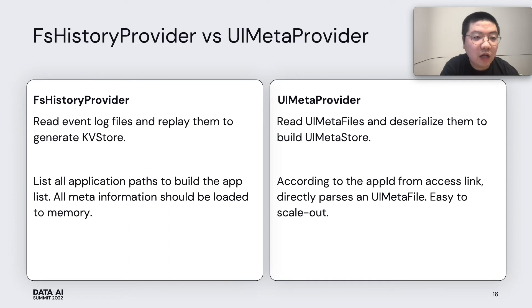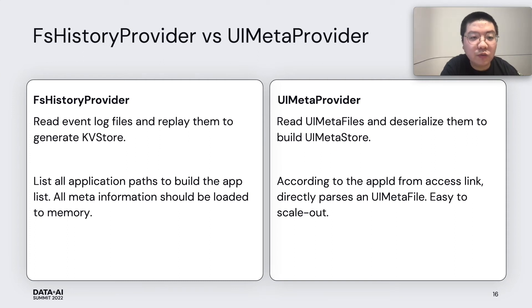In the UI service, we also wrote a new provider similar to the FS history provider — we call it the UI Meta provider. In the original FS history provider, it reads the event log files and replays them to generate the KV store, and it needs to list all application paths to build the application list, requiring all meta information to be loaded into memory. But in the UI Meta provider, it only reads the UI meta files and deserializes them to build the UI Meta store in memory, and according to the app ID from the access link, it directly parses the UI meta files. It's very easy to scale out because it keeps nothing until a user accesses the UI service.